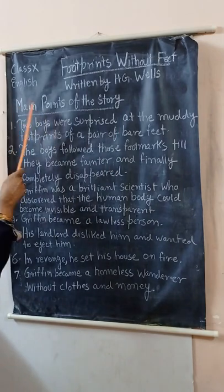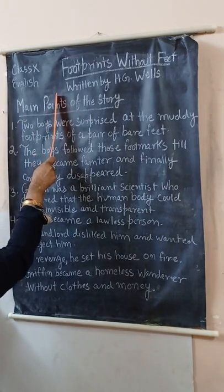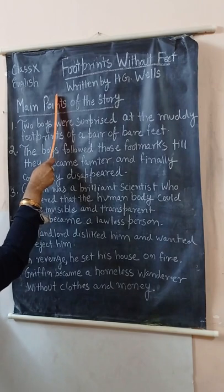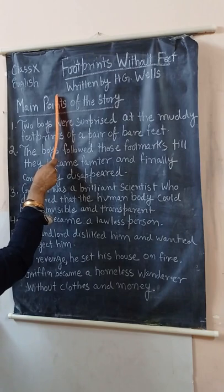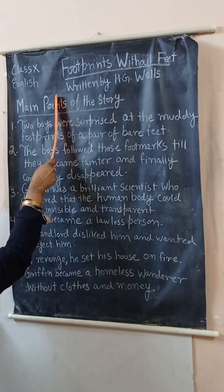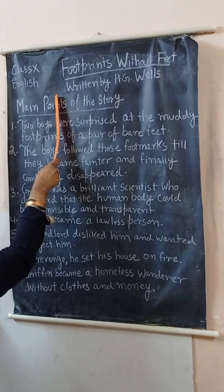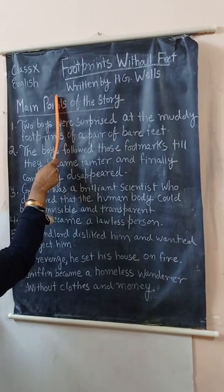In short, the theme of the story: Footprints Without Feet describes the story of a brilliant scientist who discovered a rare drug and his body became as transparent as a sheet of glass. Griffin discovered that the human body could become transparent and invisible, but he misused his discovery. He did not use the power of invisibility for the welfare of society and humanity, but instead used it to threaten, trouble, and rob innocent people.